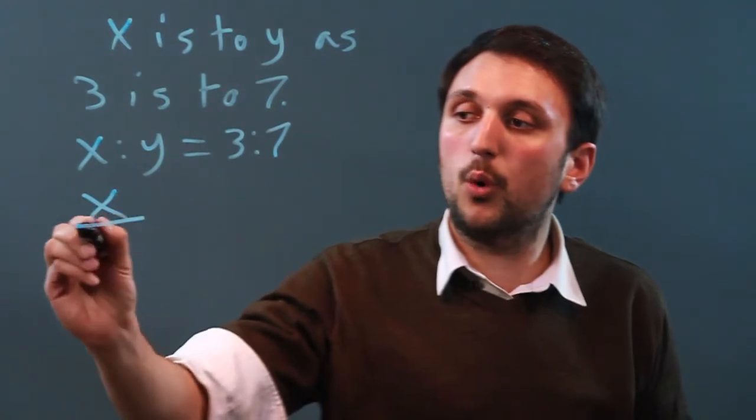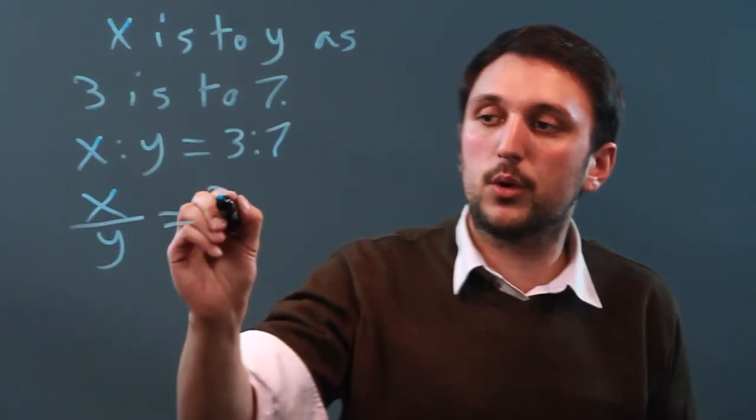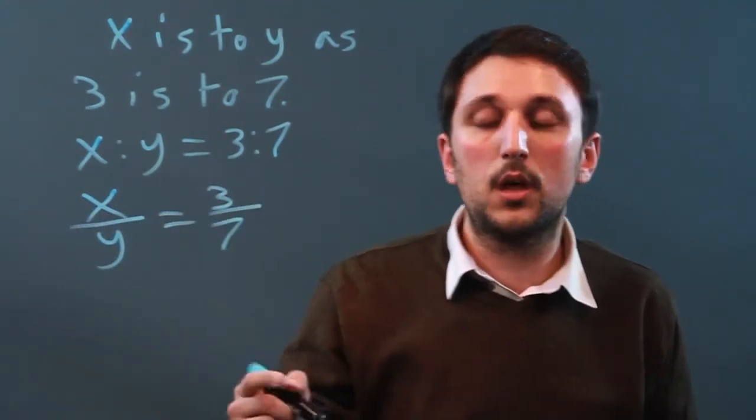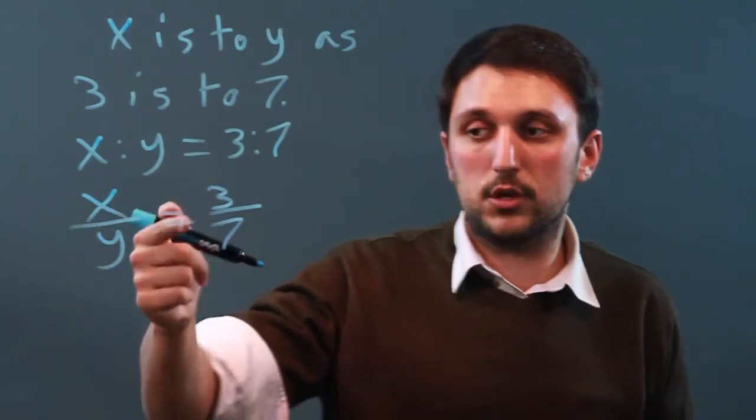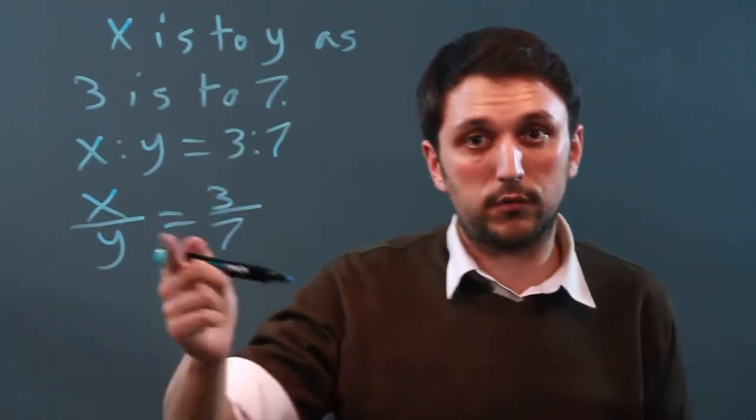We can say x over y equals 3 over 7, which, of course, if we have a fraction, an equal sign, and a fraction, we cross multiply.